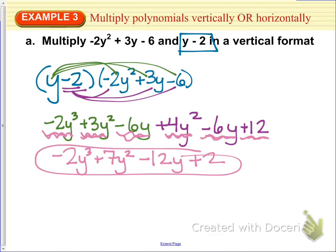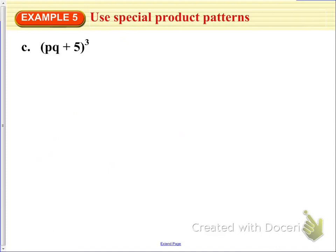So we have one more problem that we'll talk about. So using special product patterns, we've got pq plus 5 to the third power. So we are going to expand this binomial to be 3 binomials. So we've got pq plus 5, 3 times, times itself.